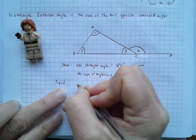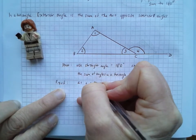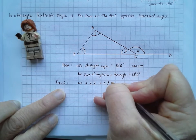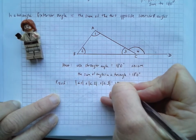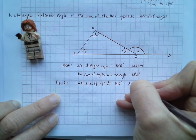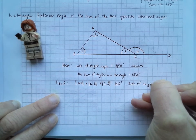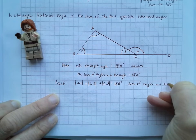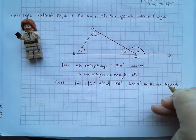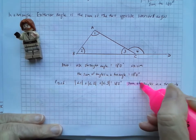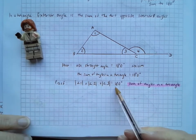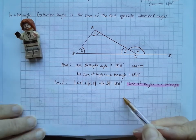We know that angle one plus angle two plus angle three, the measure of those is equal to 180 degrees because the sum of angles in a triangle. Now, these statements here, these pink statements here, are really important. You can't just write this down. You have to say why that's true. Okay.